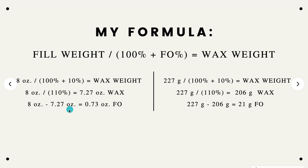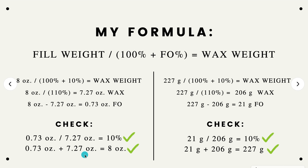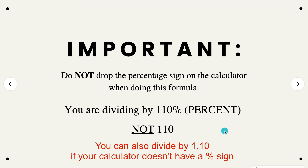Once you have the wax weight, subtract the wax weight from the fill weight to get the fragrance oil weight. Now check your work: 0.73 divided by 7.27 equals 10%, so the fragrance oil is indeed 10% of the wax weight. Also verify that the fragrance oil weight plus the wax weight equals 8 ounces — it does. Make sure you are not dropping the percentage sign on the calculator — you are dividing by 110%, not 110. If you just type 110 you will get a different number and it will throw everything off.